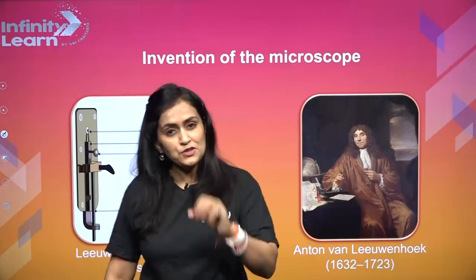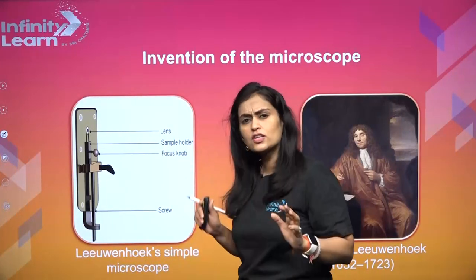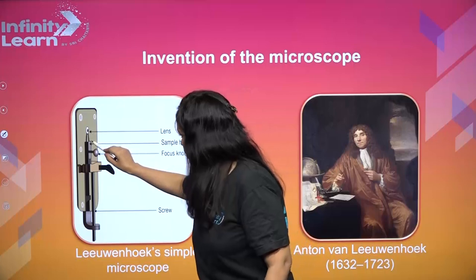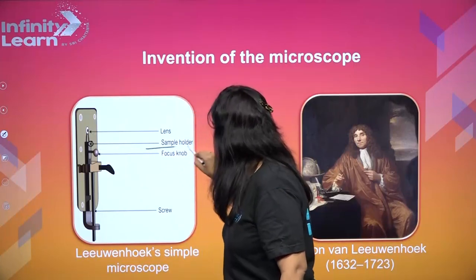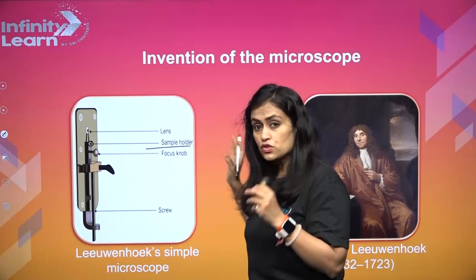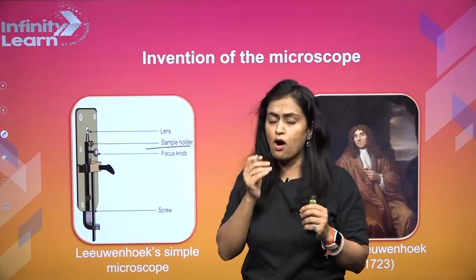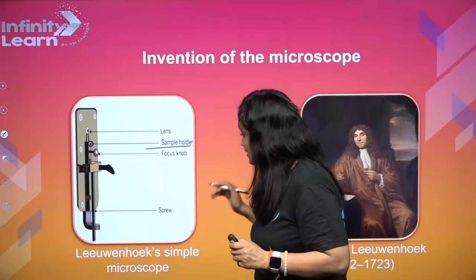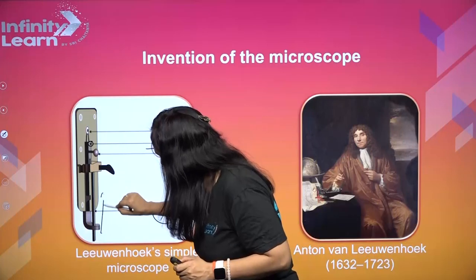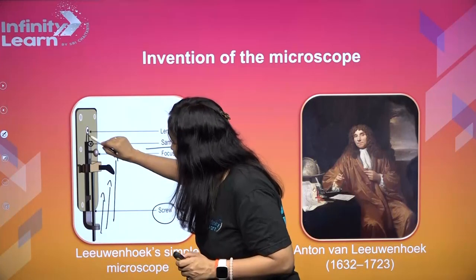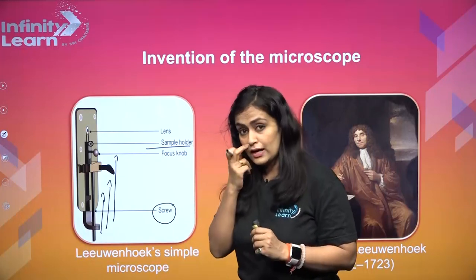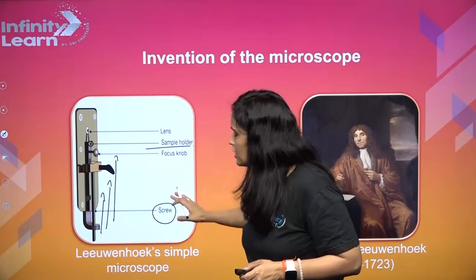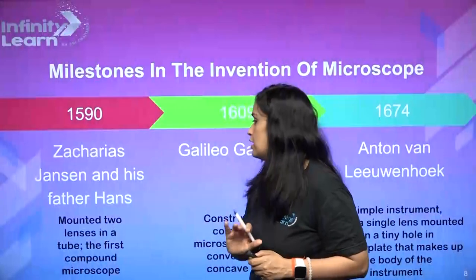The microscope that Leeuwenhoek invented was extremely simple - just a lens and a sample holder where you put the sample and observe. He used to collect samples from the pond and from his teeth scrape and load it to watch. There was a screw to adjust the height of the specimen relative to the lens and light so you could magnify and observe things. This was a very, very simple microscope developed by Leeuwenhoek.